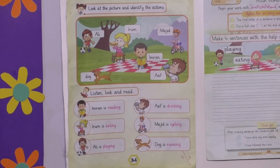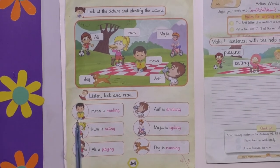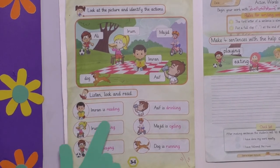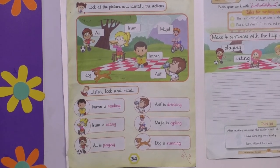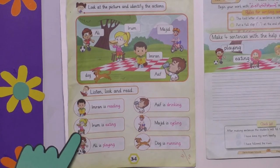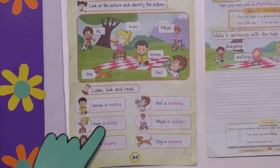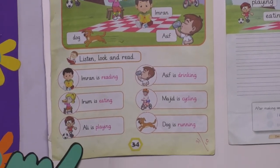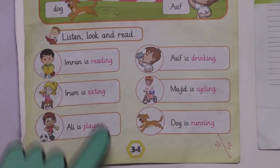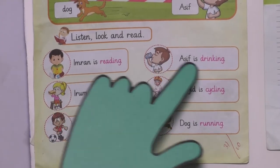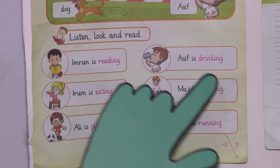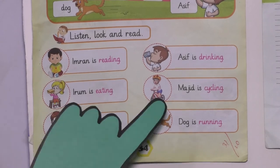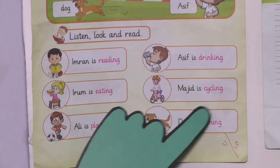Listen. Look and read. What is Imran doing? Imran is reading. What is Iram doing? Iram is eating. What is Ali doing? Ali is playing. What is Asif doing? Asif is drinking. What is Majid doing? Majid is cycling.